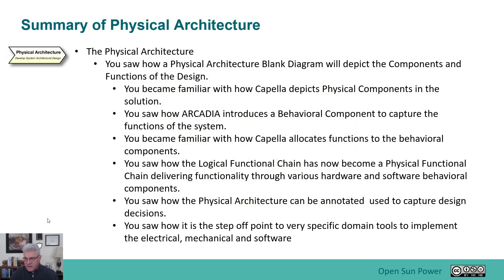To summarize the physical architecture: you saw how the physical architecture blank diagram depicts components in the functional design, how Capella depicts physical components, how Arcadia introduces behavior components to hold functionality, how Capella allows you to allocate functionality to these components, and how the logical function chain has become the physical functional chain delivering functionality through hardware and software behavior components. You also saw how the physical architecture can be annotated to capture design decisions, and how it becomes the stepping-off point for downstream design tools.